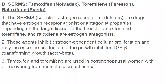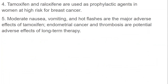These agents inhibit estrogen-dependent cellular proliferation and may increase the production of the growth inhibitor TGF-beta (transforming growth factor beta). Tamoxifen and toremifene are used in postmenopausal women with or recovering from metastatic breast cancer, and as prophylactic agents in women at higher risk of breast cancer. Moderate nausea, vomiting, and hot flashes are major adverse effects; endometrial cancer and thrombosis are potential adverse effects of long-term therapy.